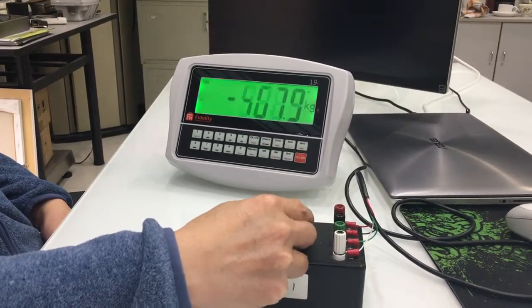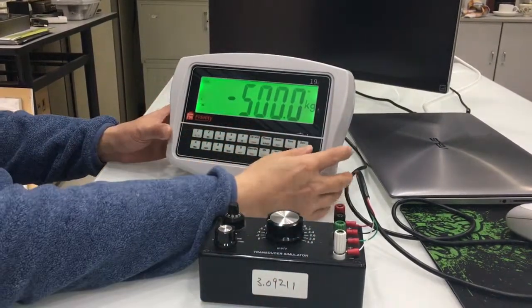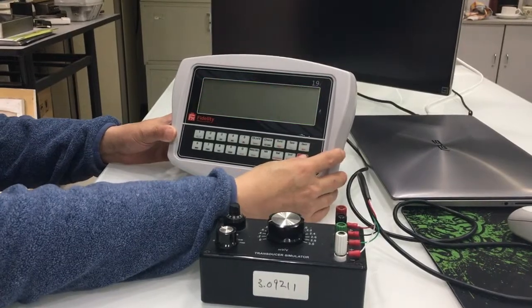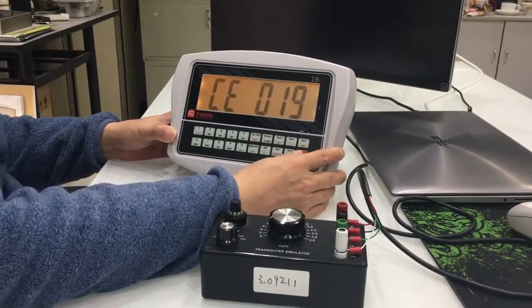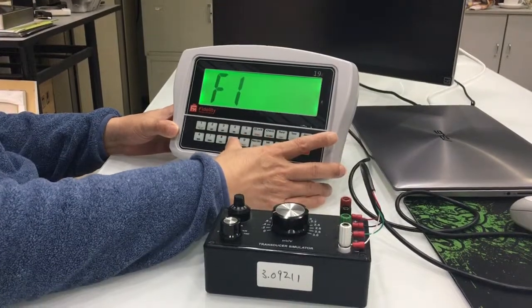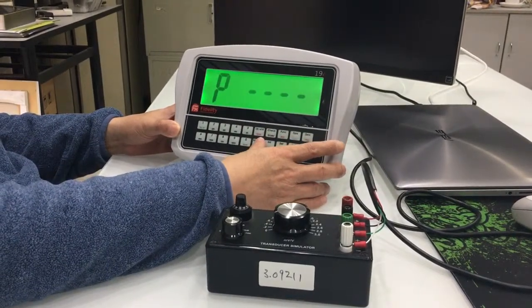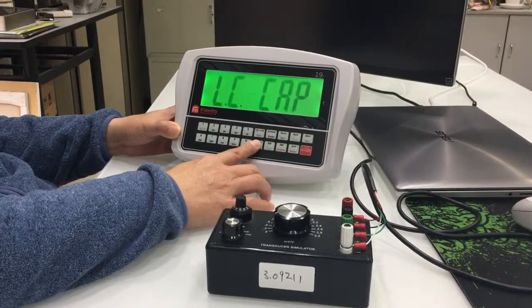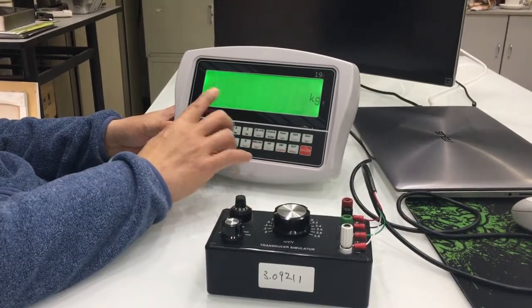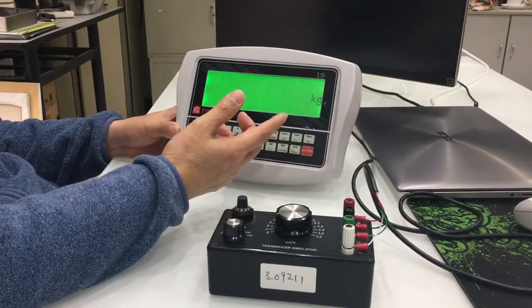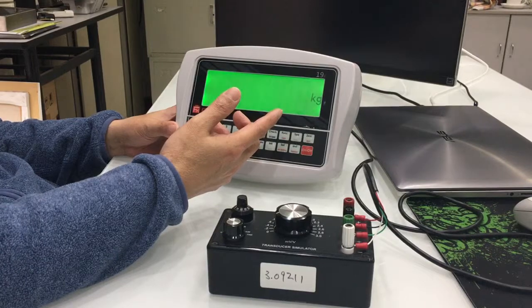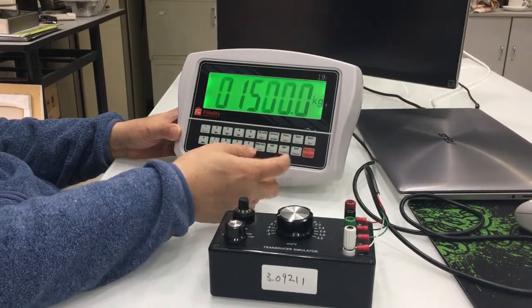We are going to correct this with this newly created calibration method. First of all, I go to internal function 90, press enter, enter the password. Then the first step is to enter the load cell capacity here.